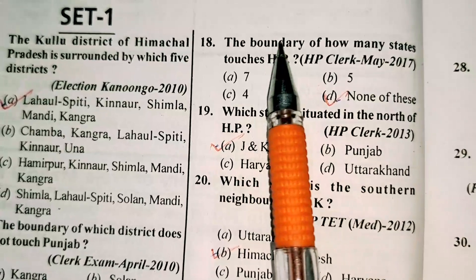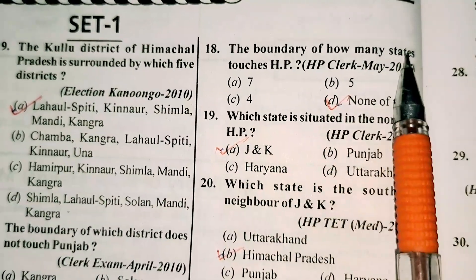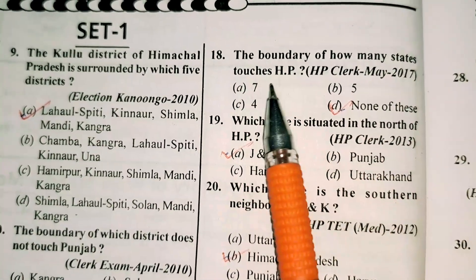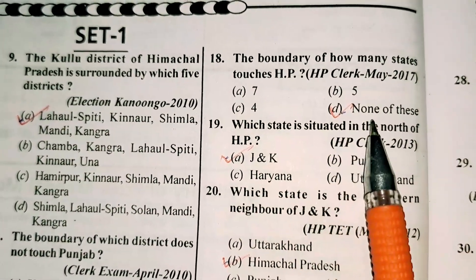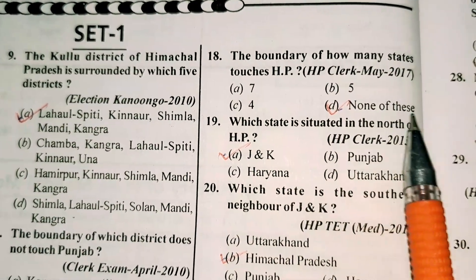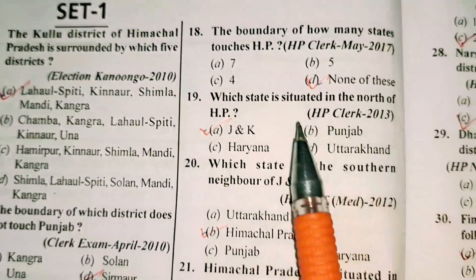Question number 18 is: the boundary of how many states touches Himachal Pradesh? Option D is correct — none of these.